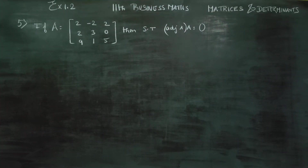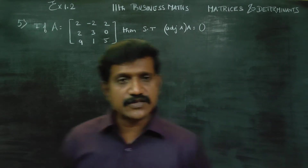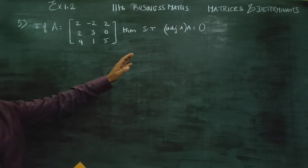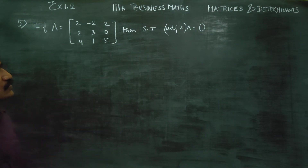Dear 11th Standard Business Maths students, I am Metro Karanagaran. In exercise number 1.2, sum number 5, if A is equal to a given matrix, then show that adjoint A into A is equal to 0.